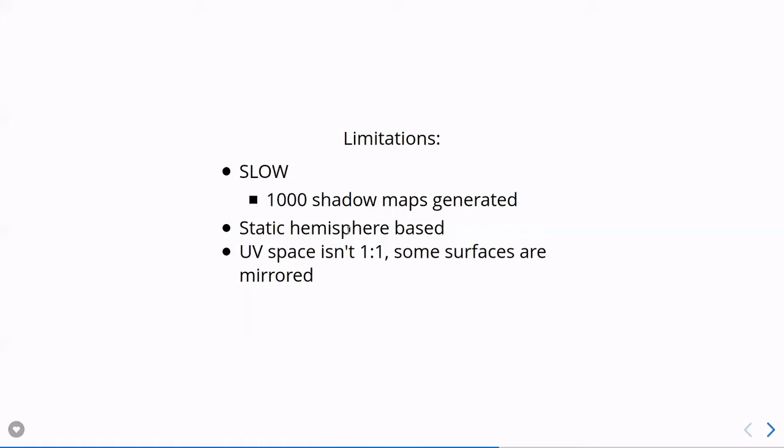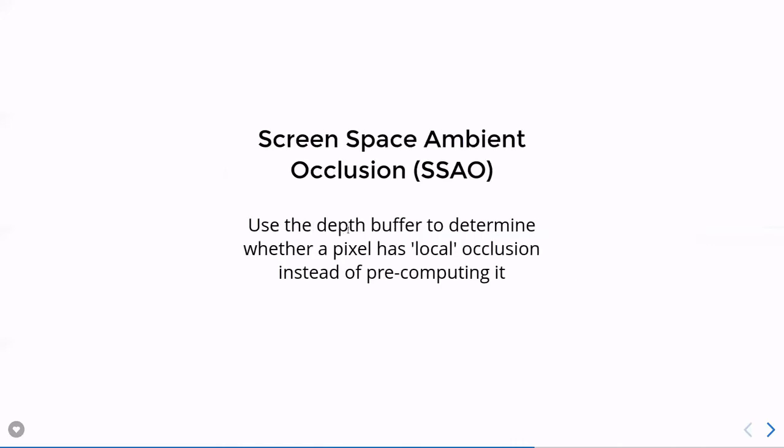Instead, a lot of people opt to use, well, pre-calculated ambient maps. So artists will sometimes create an ambient map and physically paint on, okay, these are the dark and these are the light sections, usually crevices and nooks and crannies. But an even simpler way to get ambient occlusion data is to generate it on the fly using screen space. And so screen space ambient occlusion is a very popular technique that uses the depth buffer to figure out whether a pixel is going to be light or dark based off an ambient lighting value. And it does this by looking at the surrounding neighborhood of pixels around the pixel in question.